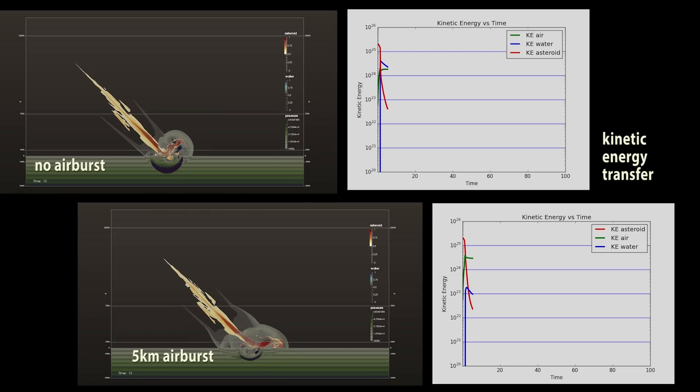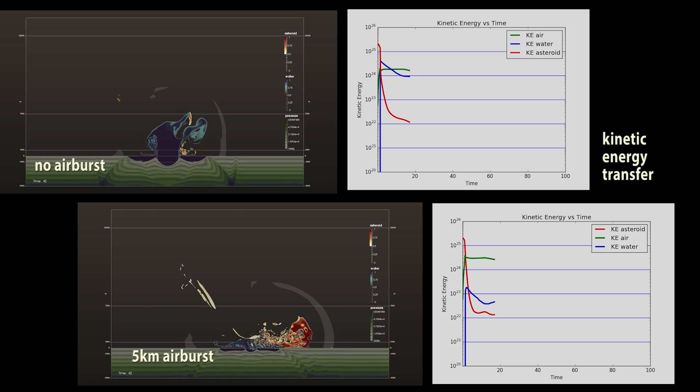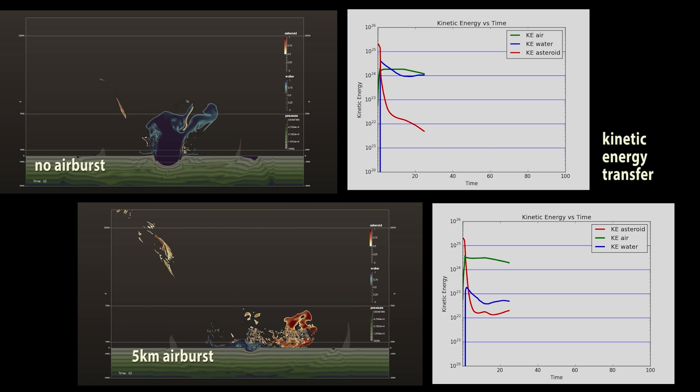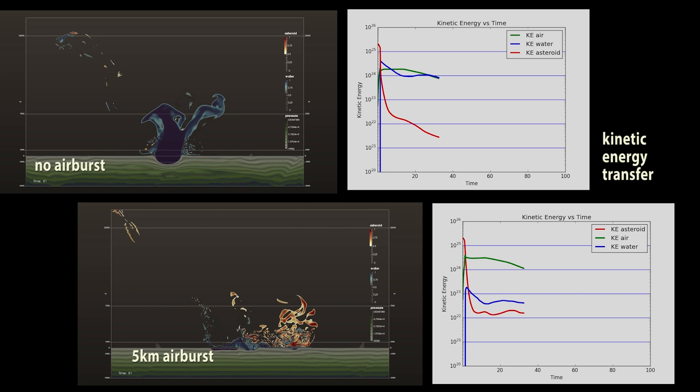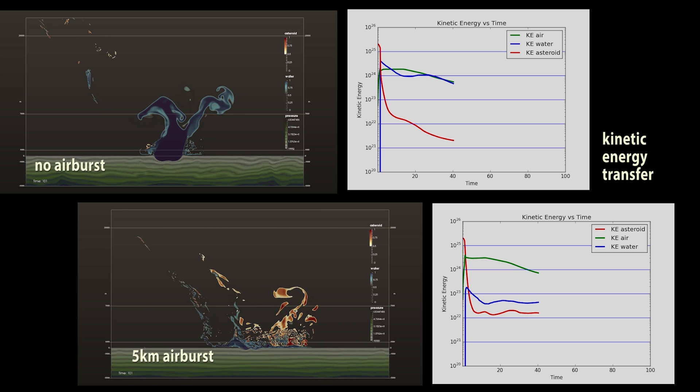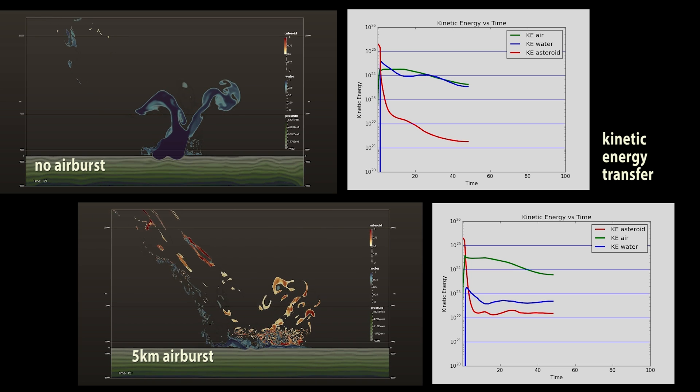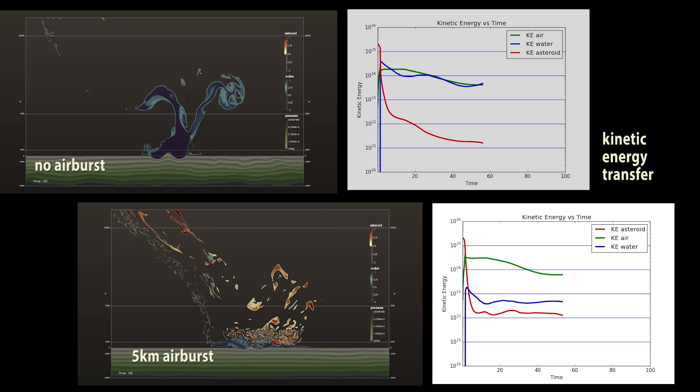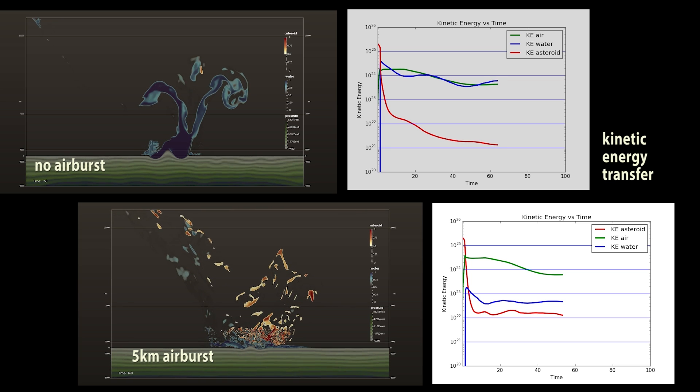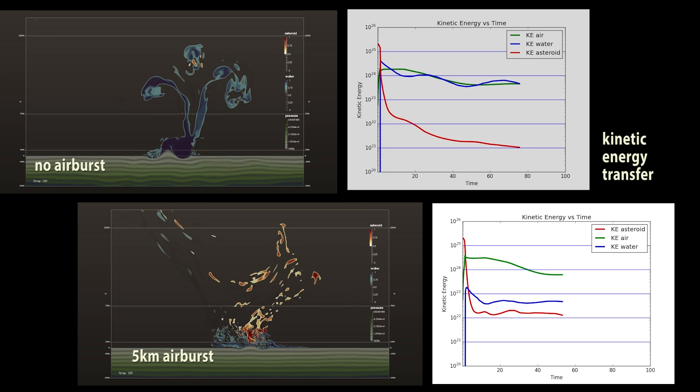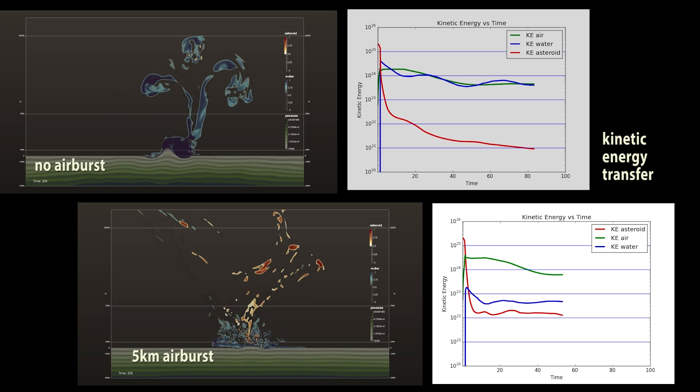Here we see the difference in energy transfer with and without an airburst. Whether or not there is an airburst changes how much kinetic energy is transferred to the air and water. An airburst breaks the asteroid apart, so that much of it skims the surface of the water rather than slamming into it. For the same size of asteroid, this results in a much smaller effect on the ocean.